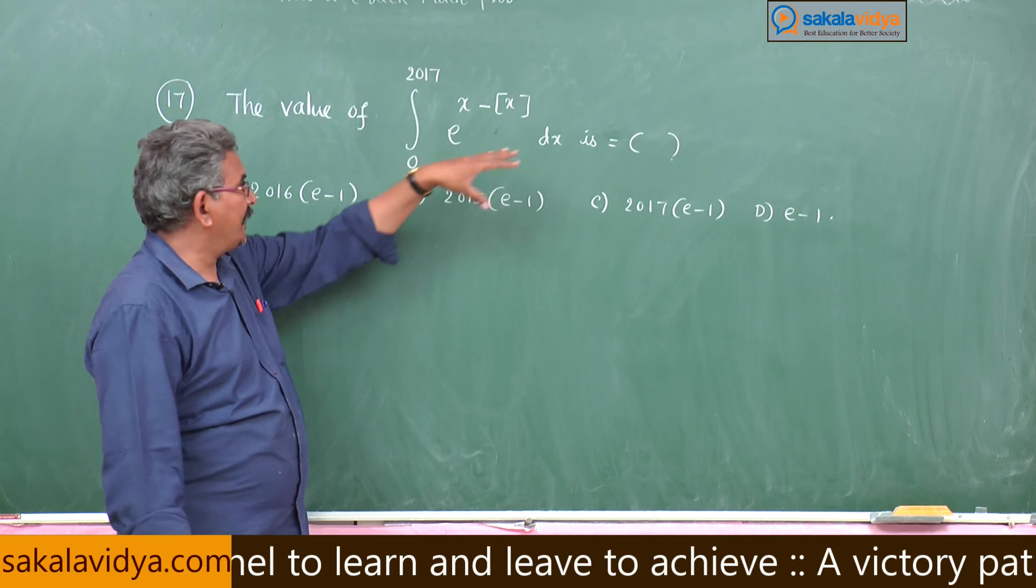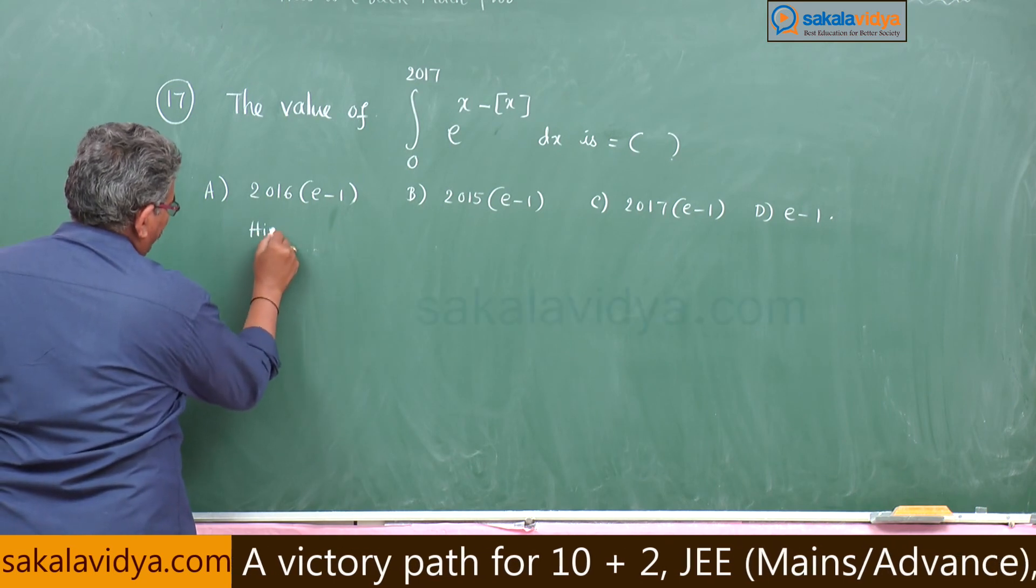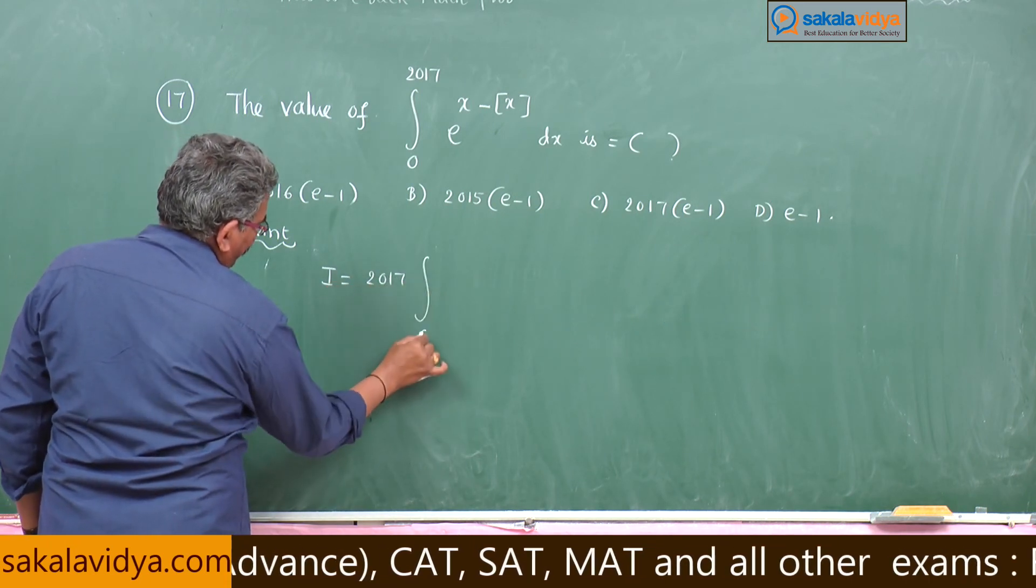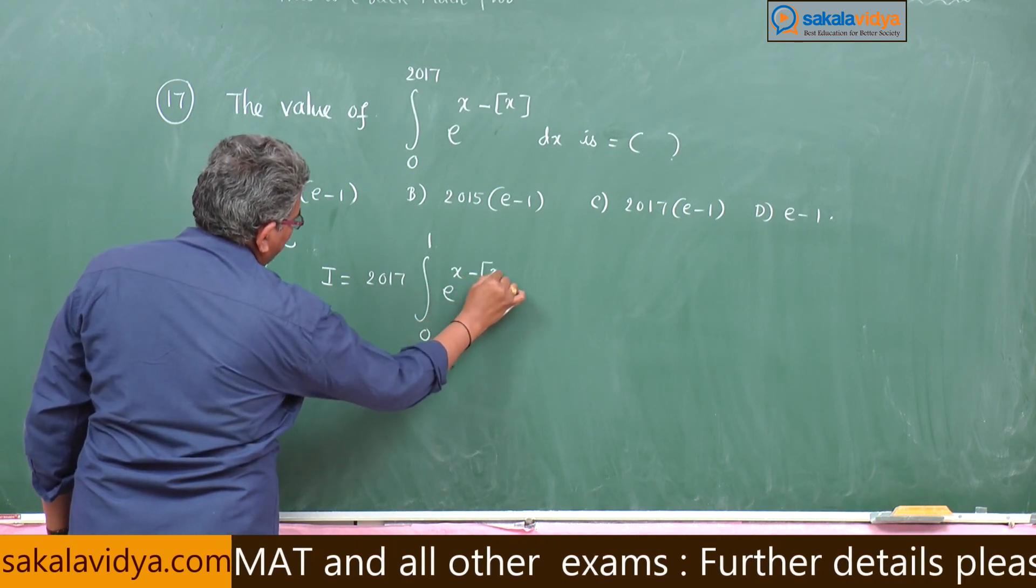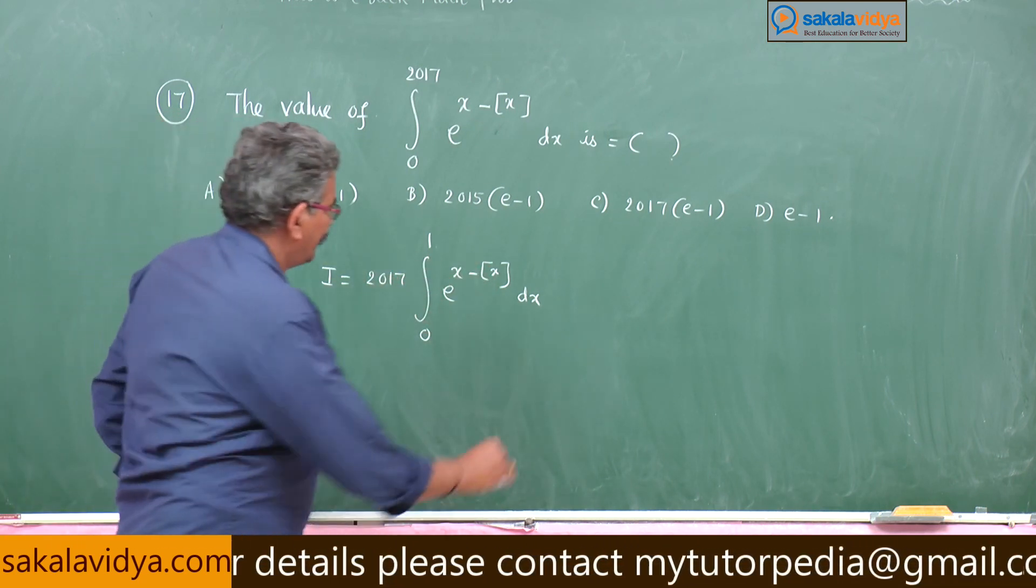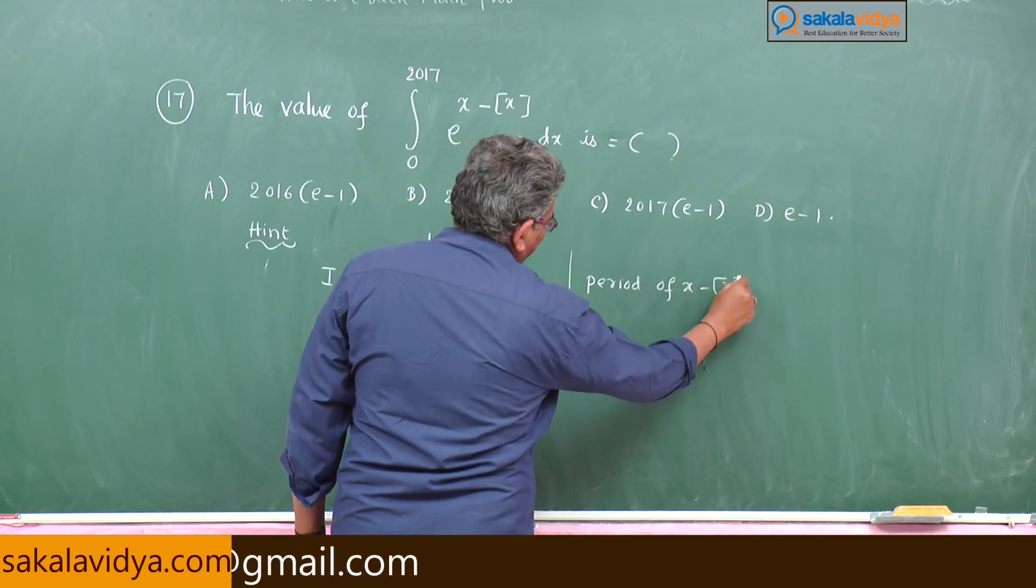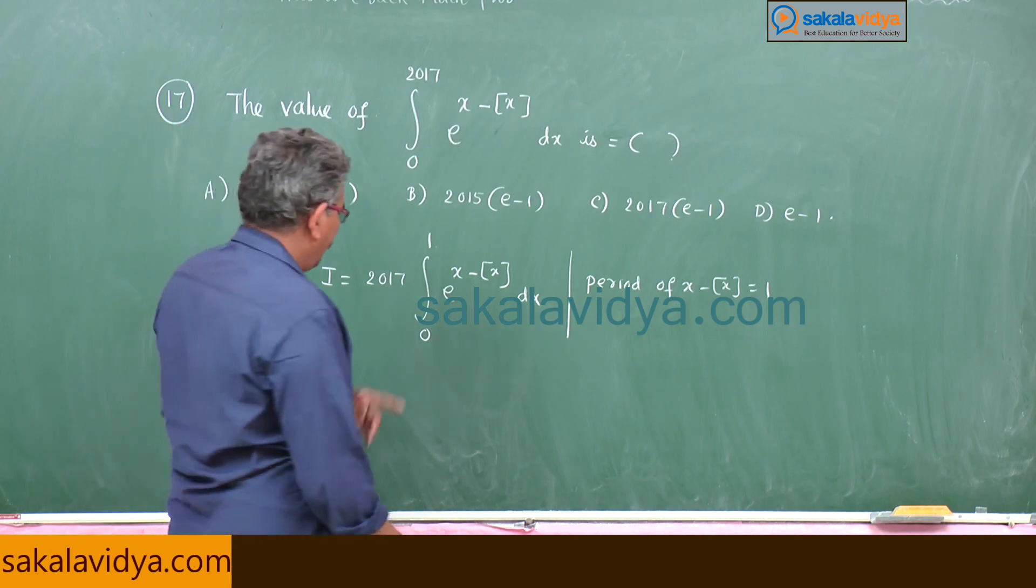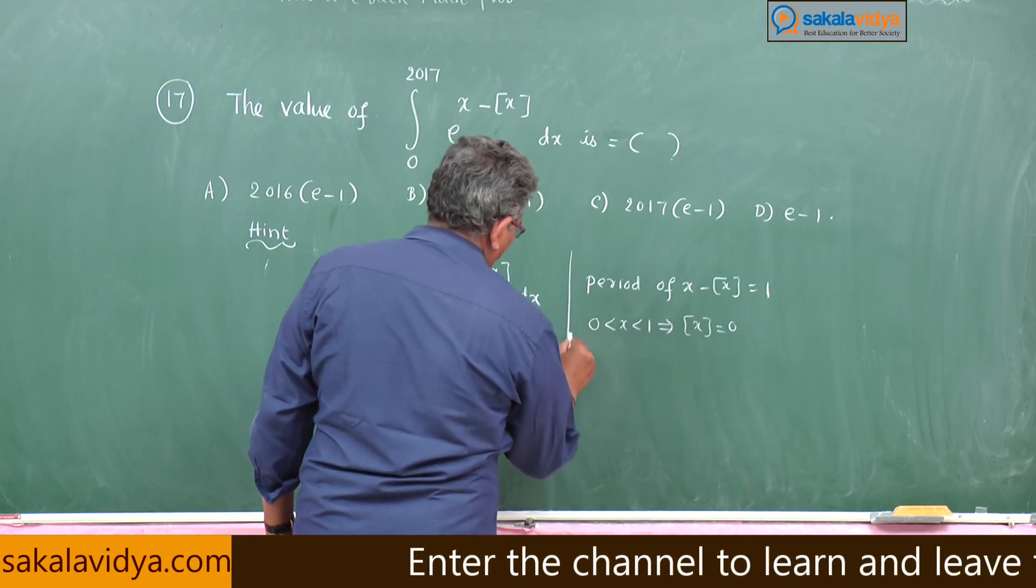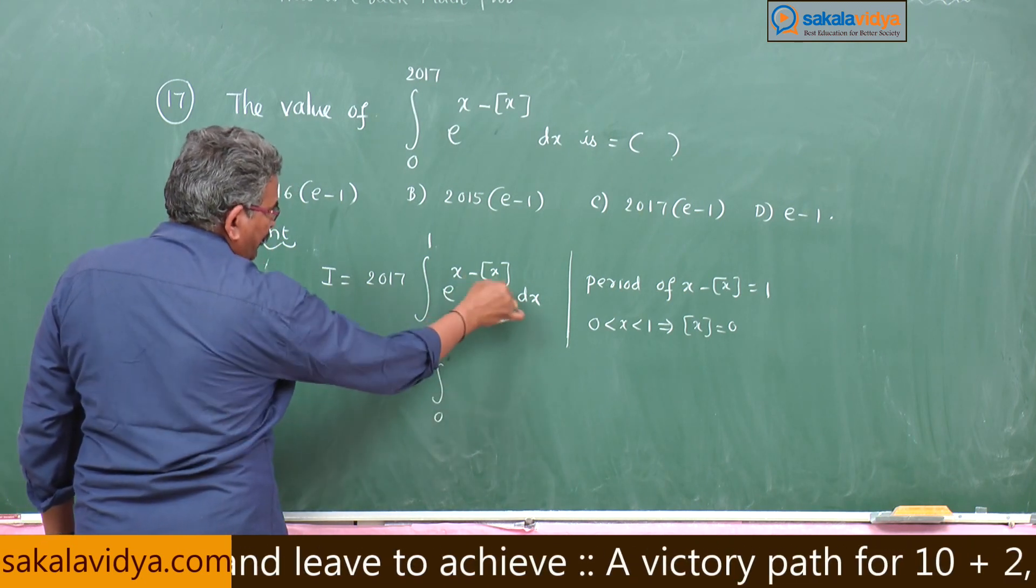Since it is a periodic function, we can rewrite this as 2017 times the integral from 0 to 1 of e^(x - [x])dx. Remember, between 0 and 1 (0 < x < 1), the step function [x] becomes 0. So the problem becomes 2017 times integral 0 to 1 of e^x dx.